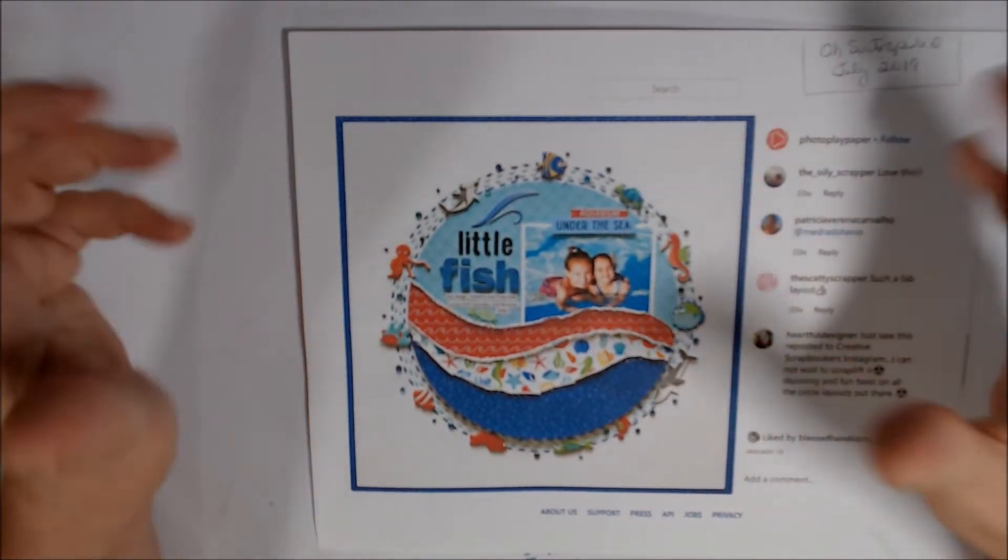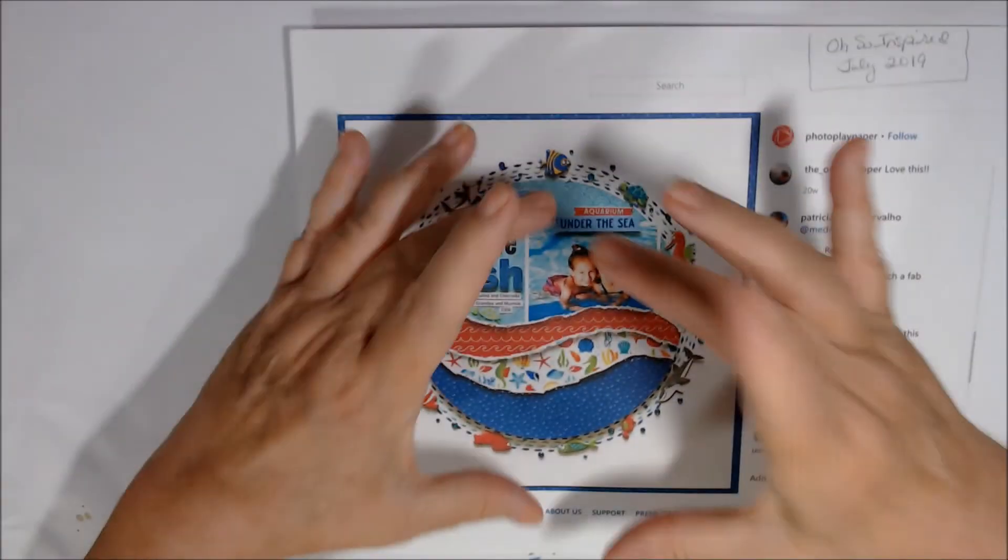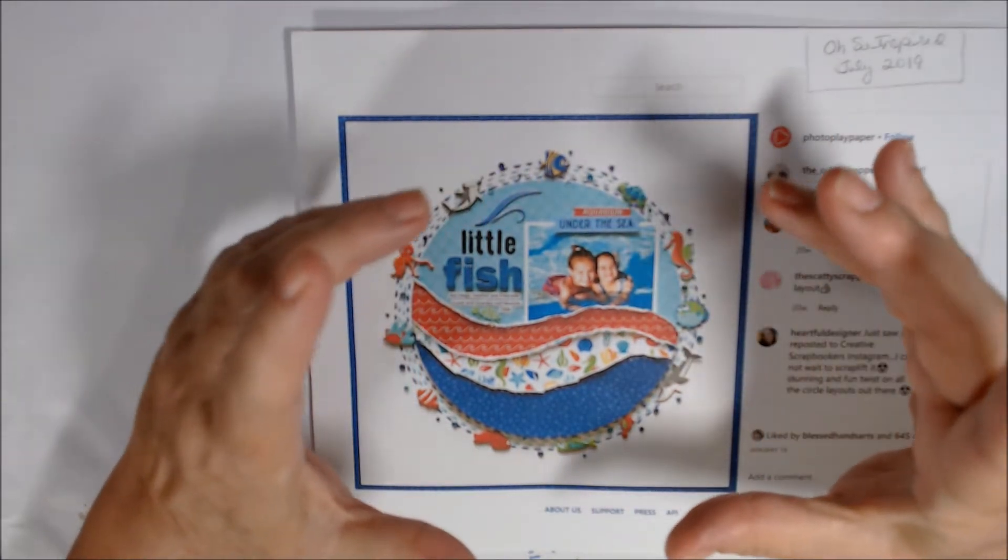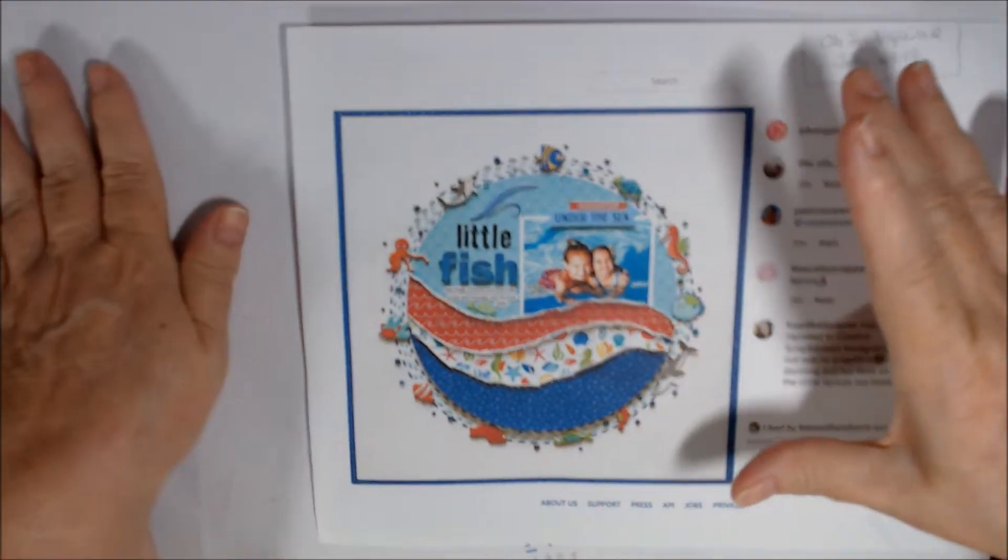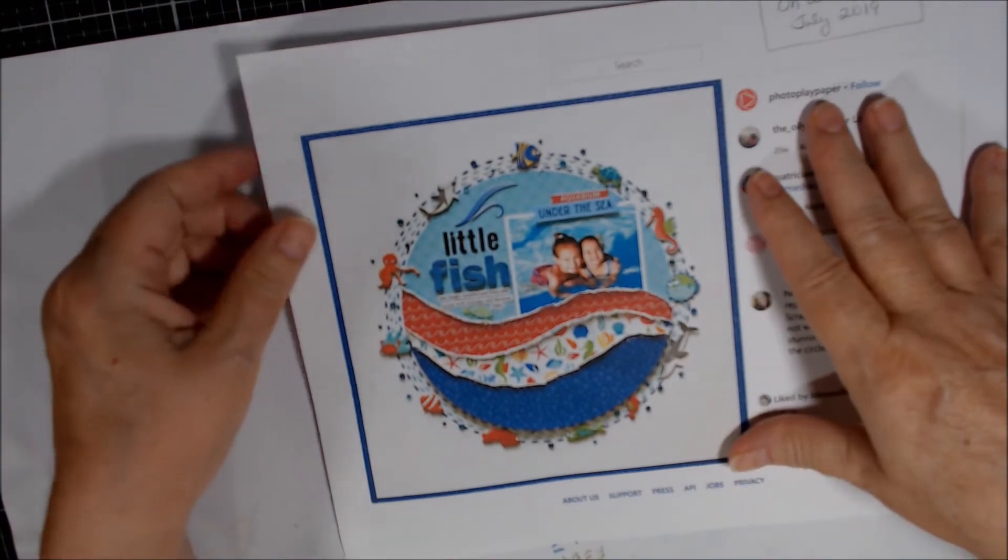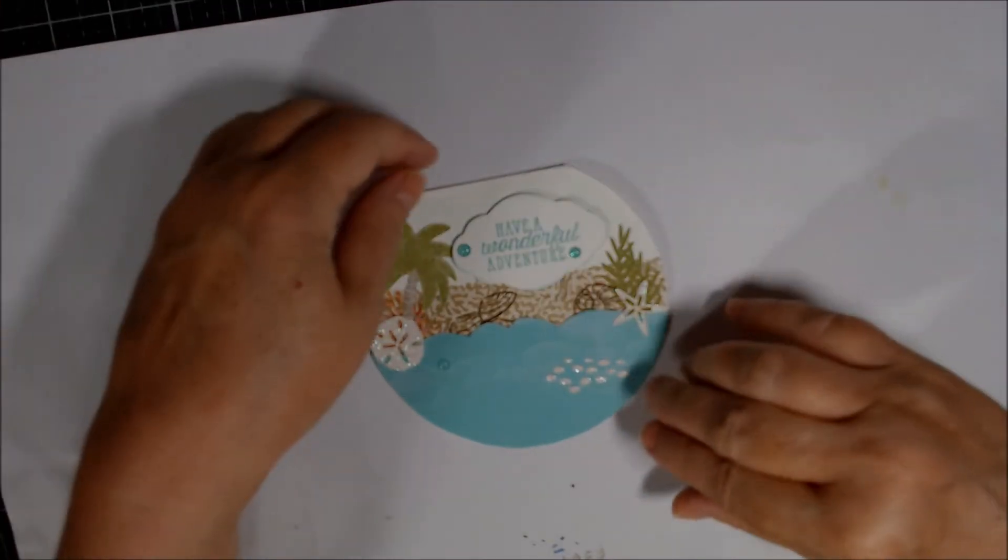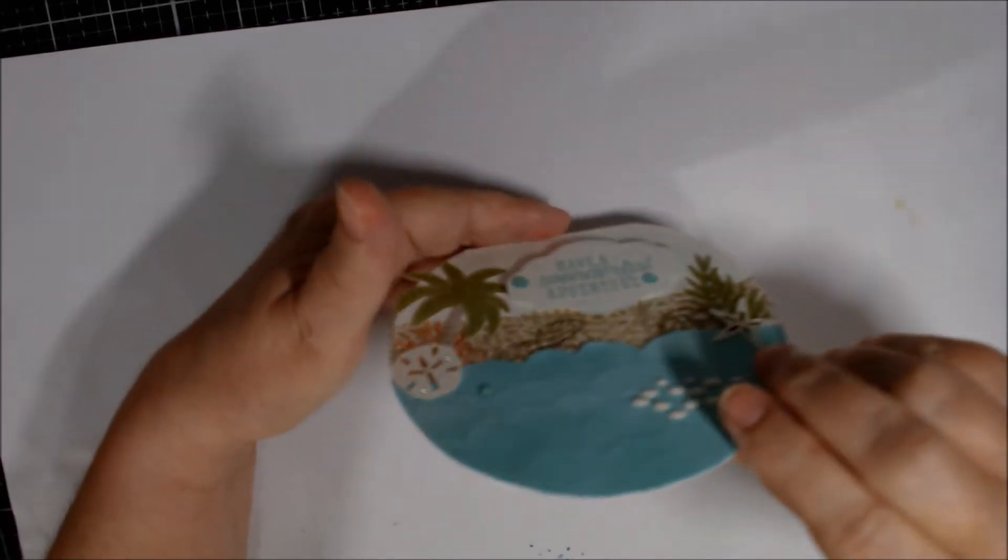What I took from this is the circle and also sort of the ocean theme. So I decided to make a circle card. And here it is. But it opens like this.